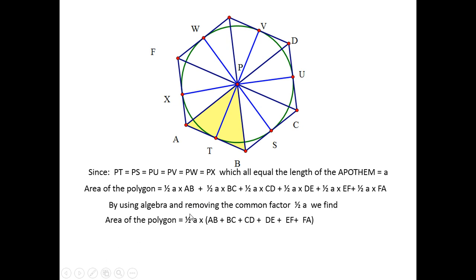If we take a look at this from an algebraic perspective, we have a common factor of one-half A from each of these. So, I'm going to pull that out. I'm going to have one-half A times AB plus BC plus CD plus DE plus EF plus FA.